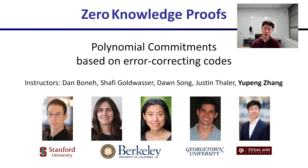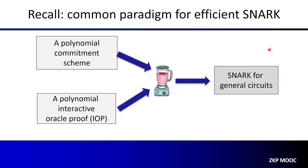Hello, everyone. Welcome back to our MOOC on zero-knowledge proofs. I'm Yupeng Zhang, and today I'm going to talk about polynomial commitment schemes based on error-correcting codes. Recall that a common paradigm to construct efficient SNARKs for general circuits is to combine a polynomial commitment scheme with an appropriate polynomial interactive oracle proof, such as the Plonk IOP and interactive proofs as we've seen in previous lectures.